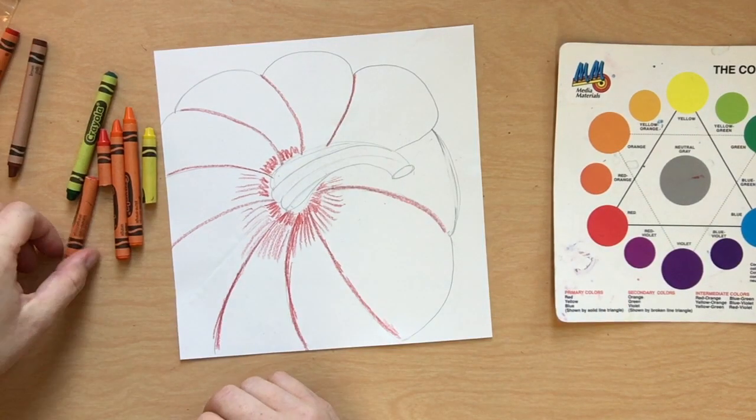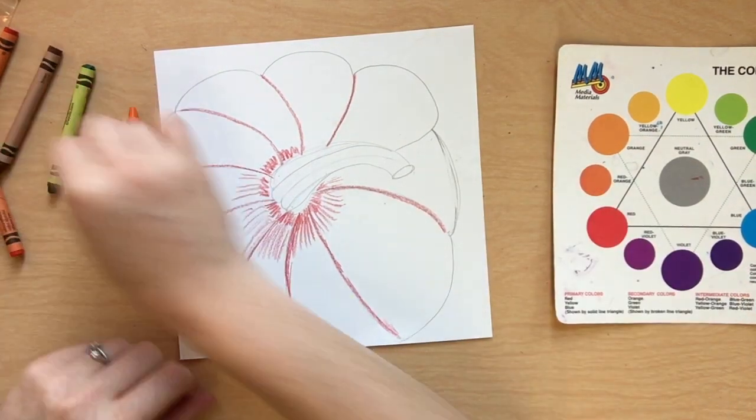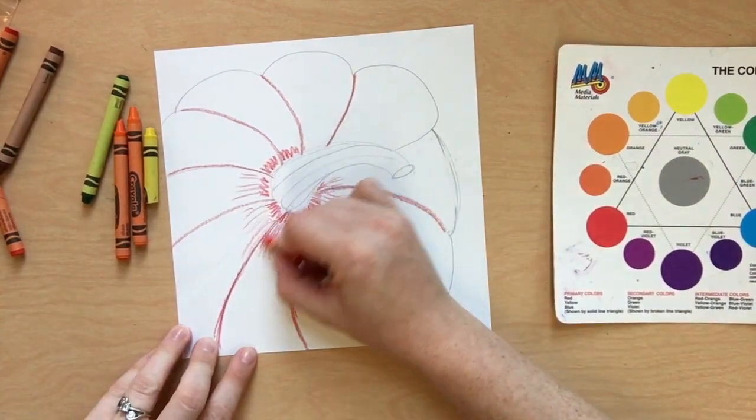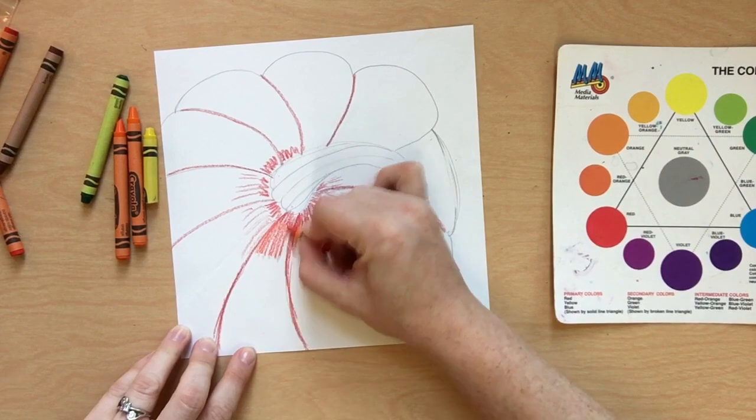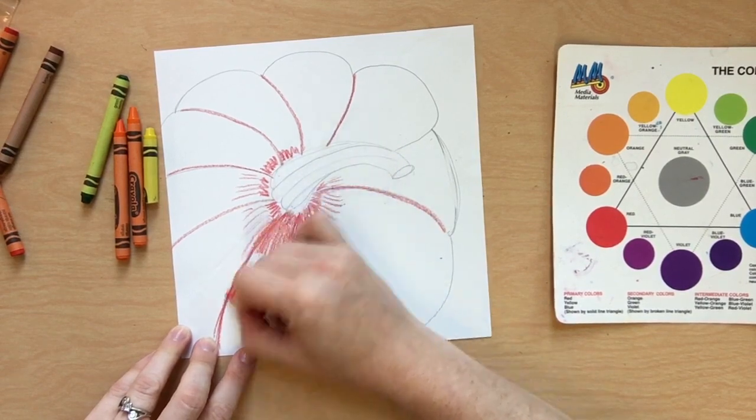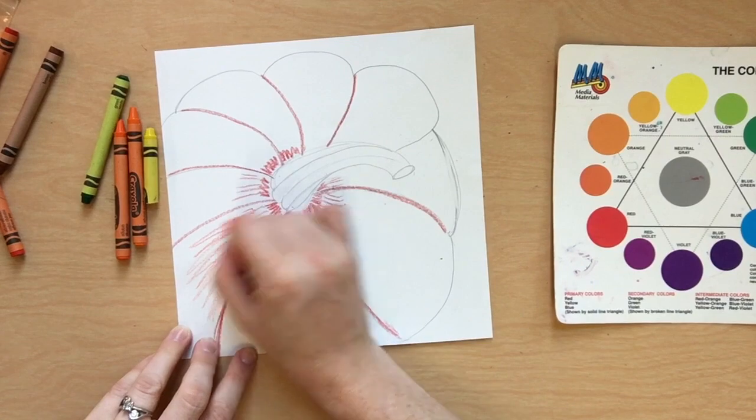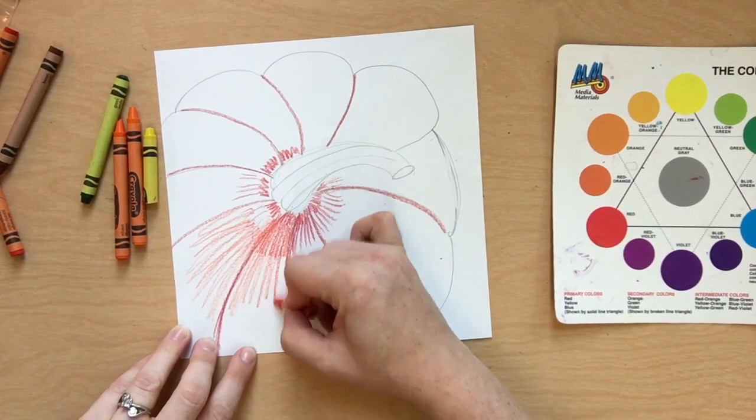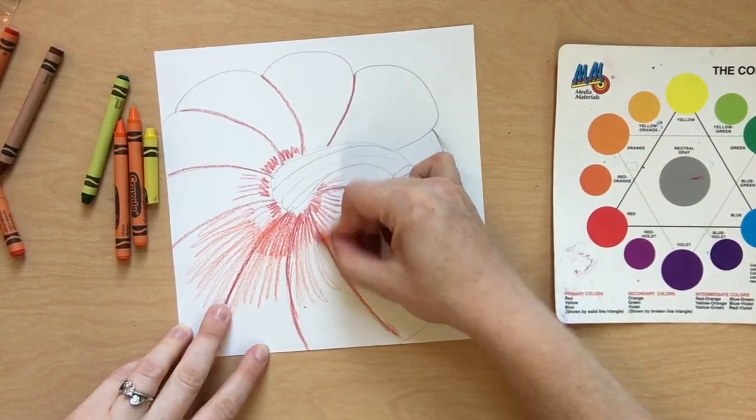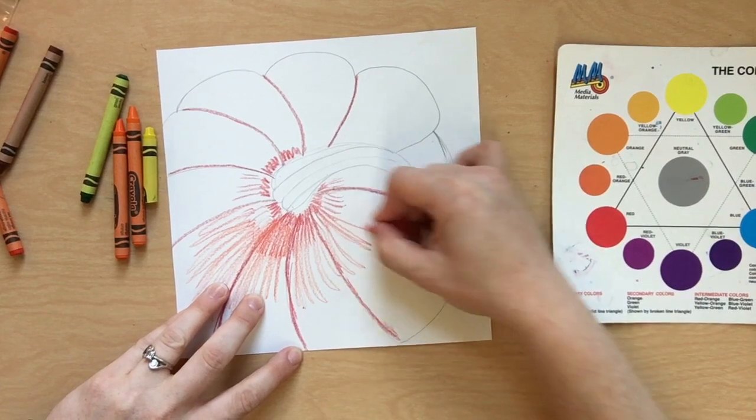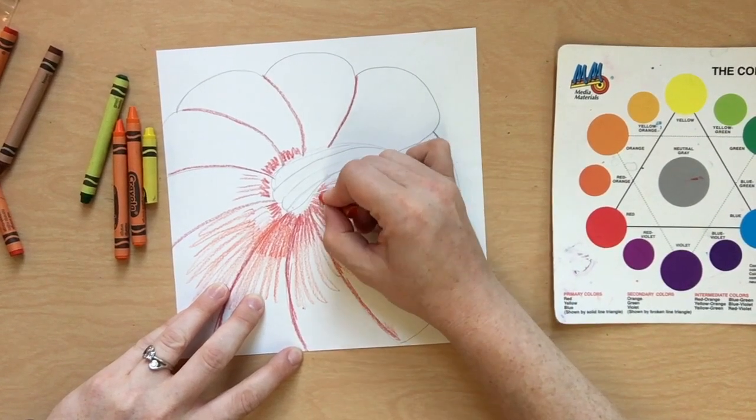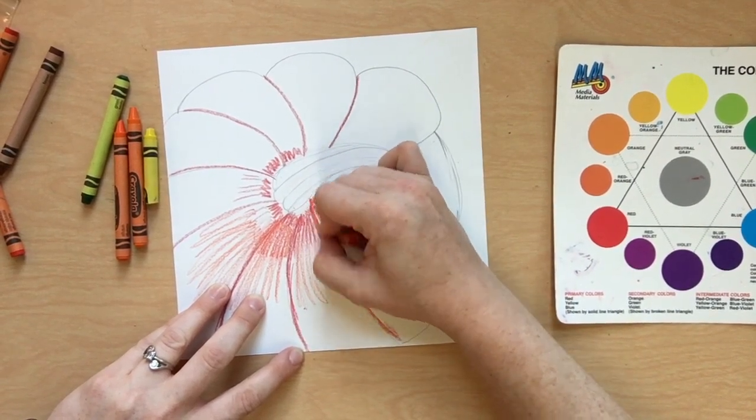Switching to our red-orange. It's a little lighter than red, more orangey, a reddish-orange. Color over those same lines. We're trying to get our darkest parts in first. Notice that my lines are becoming very long. They're still curved, and they're still pointing in the same direction.